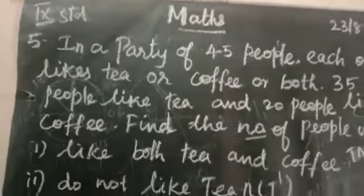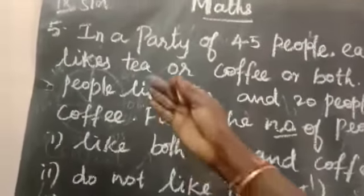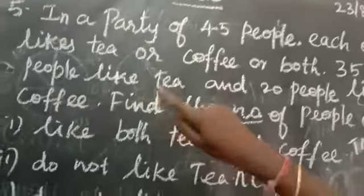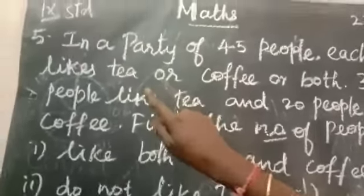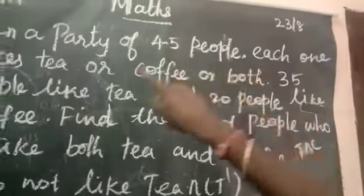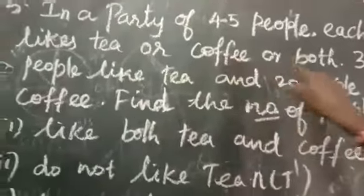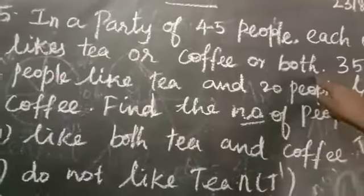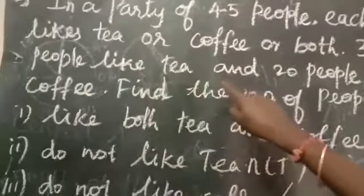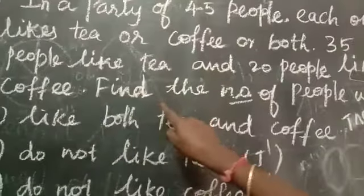Good morning to all. Now we see the fifth sum in exercise 1.6. In a party of 45 people, each one likes tea or coffee or both. 35 people like tea and 20 people like coffee.